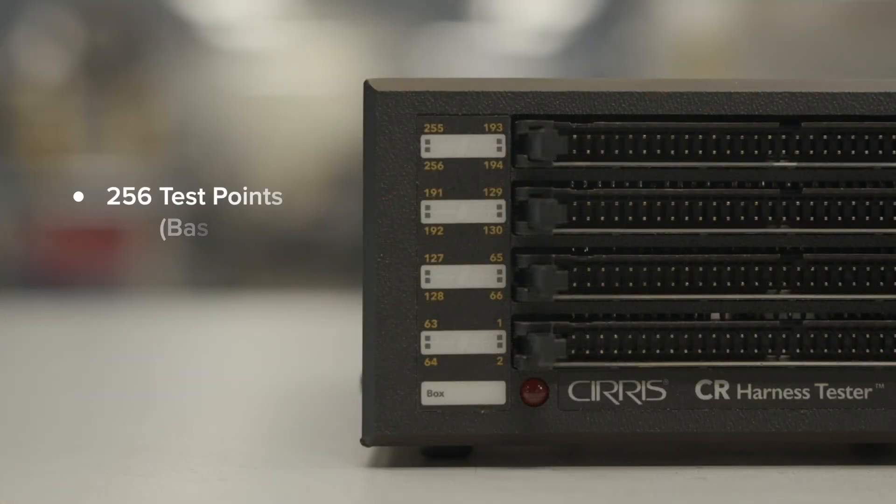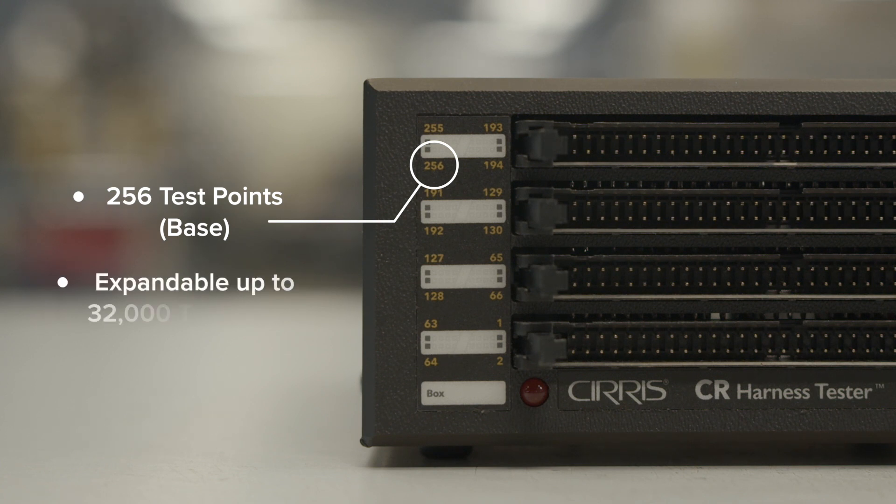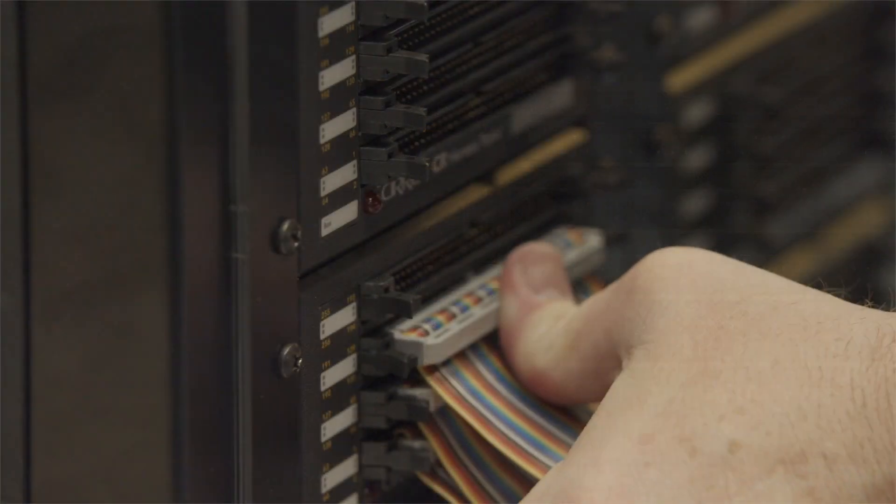The base unit contains 256 test points. Attaching more scanners makes the CR expandable up to 32,000 test points.